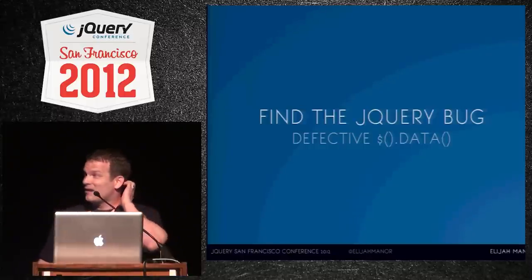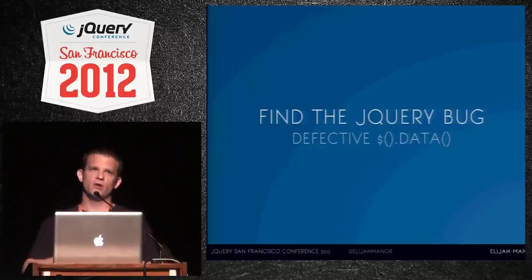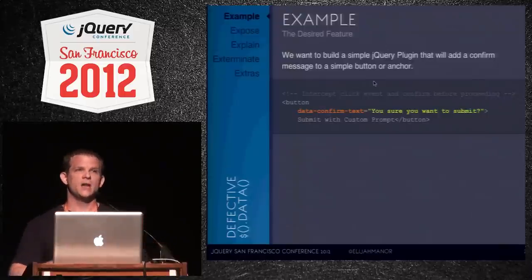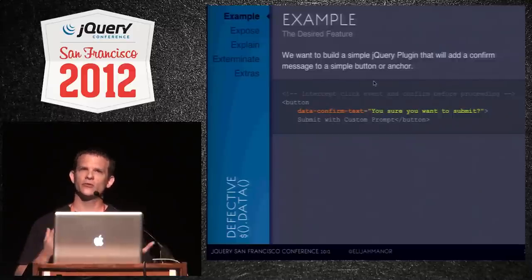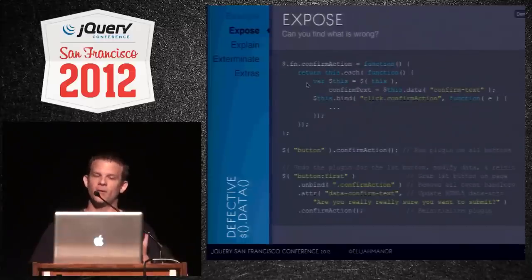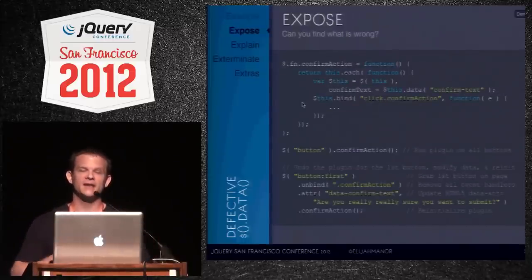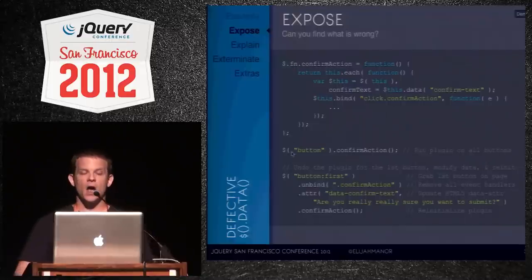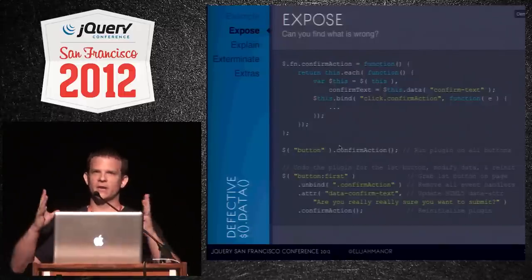I call this 'defective data.' If you don't understand what's really going on, you'll get some head-scratching moments. We're creating a confirmAction plugin that works on buttons. When you click a button using this plugin, it asks 'are you sure you want to do that?' We have a button with an HTML5 data attribute storing the confirmation text. The plugin grabs the data attribute and wires up namespaced events.